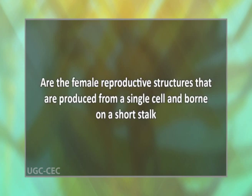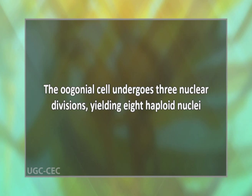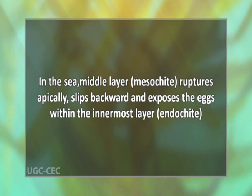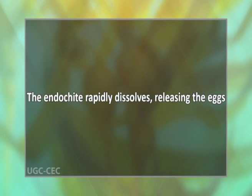Now let us talk about oogonia. These are the female reproductive structures produced from a single cell and born on a short stalk. They are lesser in number as compared to antheridia. The oogonium cell undergoes three nuclear divisions yielding eight haploid nuclei. The cytoplasm then cleaves into eight eggs, enclosed in a cell wall of three layers. When the oogonium is mature, the outer layer, the exochite, ruptures, releasing the packet of eggs still surrounded by the other two wall layers into the sea. In the sea, the middle layer, the mesochite, ruptures apically, slips backward, and exposes the eggs within the innermost layer, the endochite. The endochite rapidly dissolves, releasing the eggs.